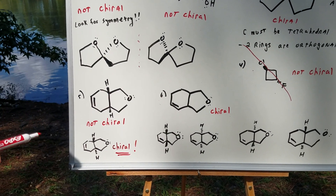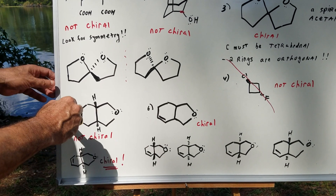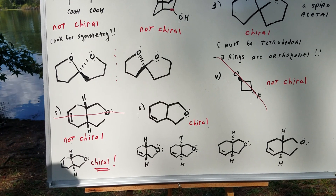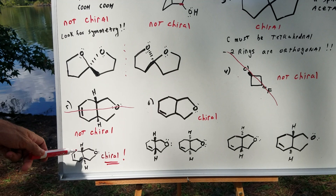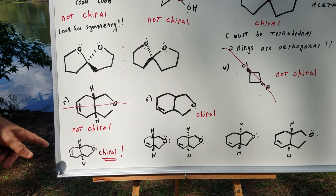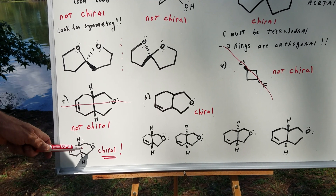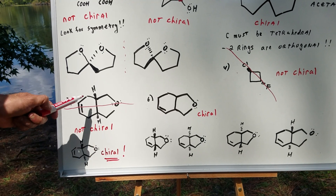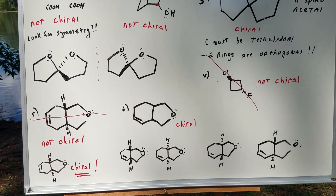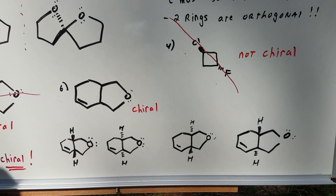Number five — here's another hard problem. This molecule has a ring junction which is cis. If you draw a plane of symmetry across it, that's easy to see, and it is not chiral. However, if the ring junction is trans, you would not be able to draw that plane of symmetry across the ring, so the trans ring junction would be chiral and would have an enantiomer.